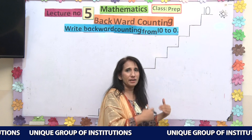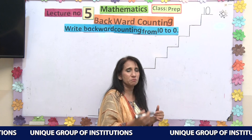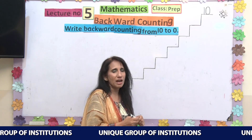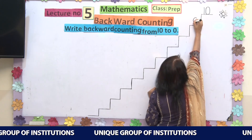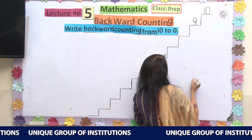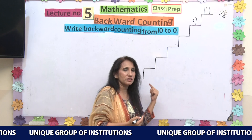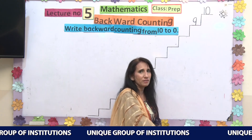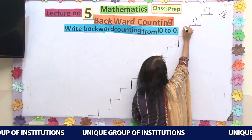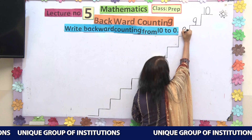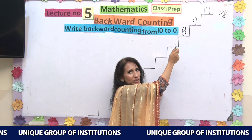What comes before 10? We are recalling what comes before 10. Before 10, we have number 9. So I am going to write number 9 here. So: 10, 9. Now recall what comes before number 9. Before number 9, we have number 8. So I am going to write number 8 here on this step. So: 10, 9, 8.